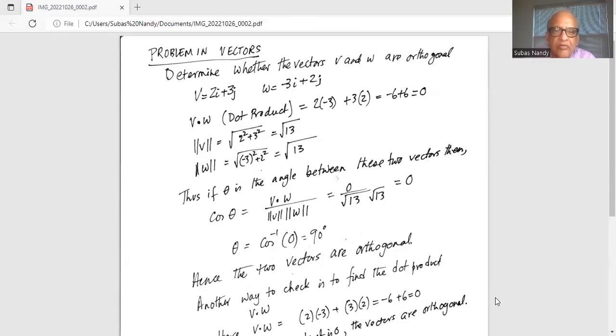So magnitude of v is equal to square root of 2 square plus 3 square, which is square root of 4 plus 9, square root of 13. And magnitude of w is square root of minus 3 square which is 9 plus 2 square which is 4. 9 plus 4 is 13.